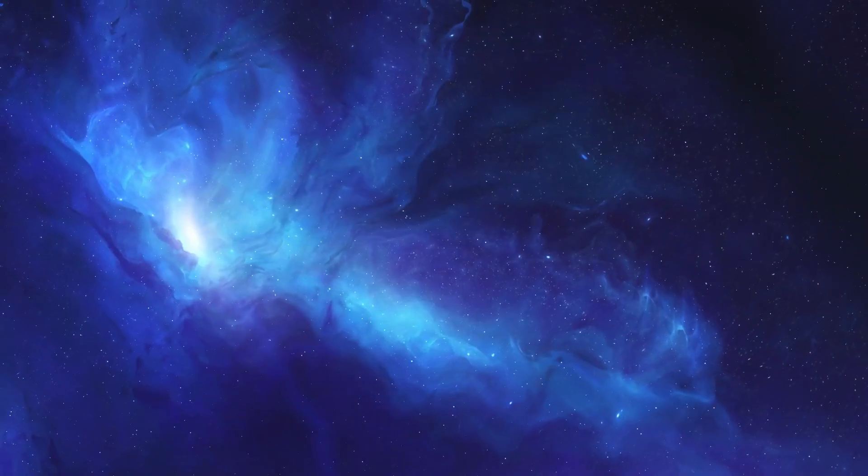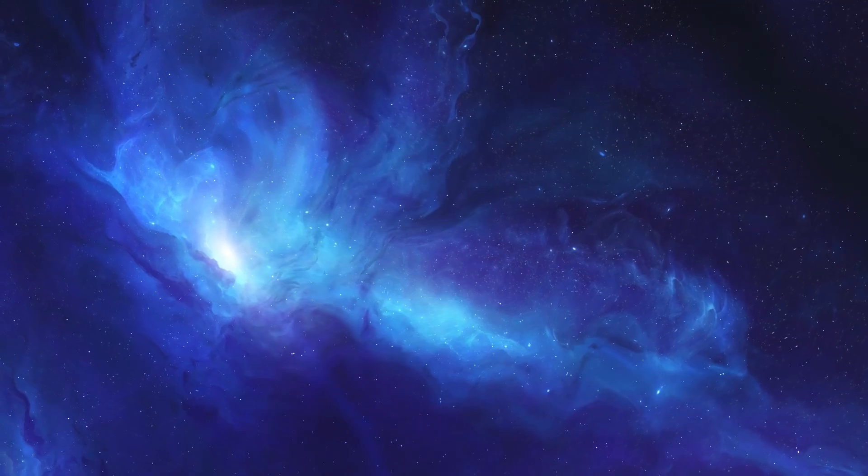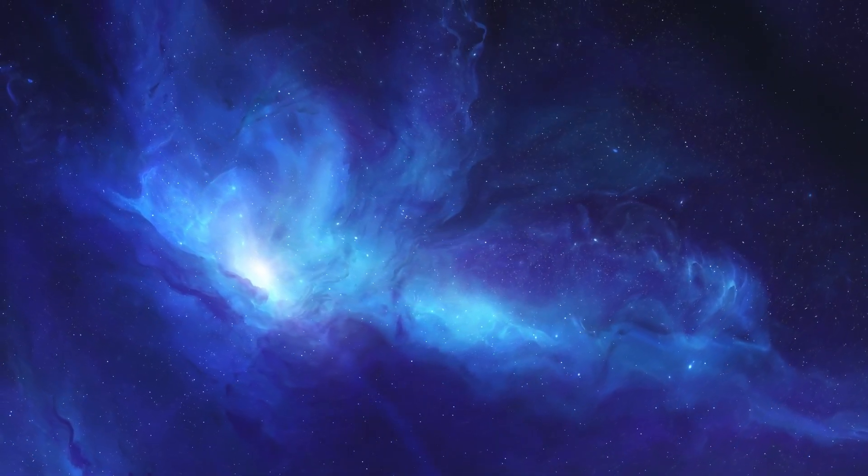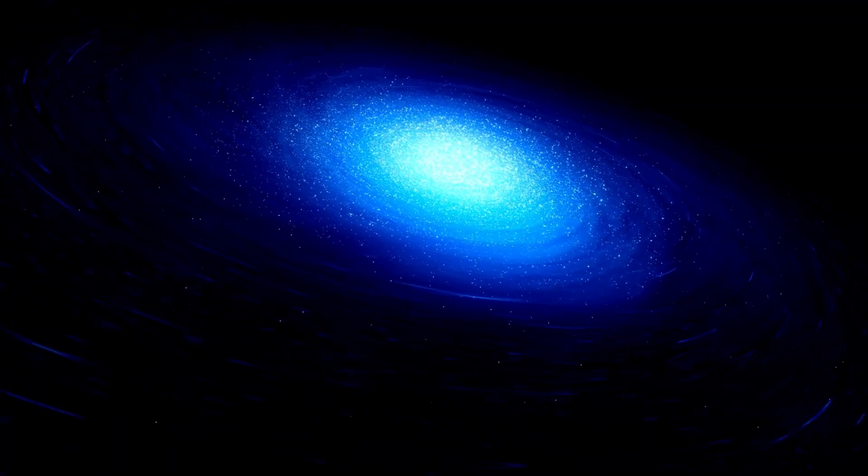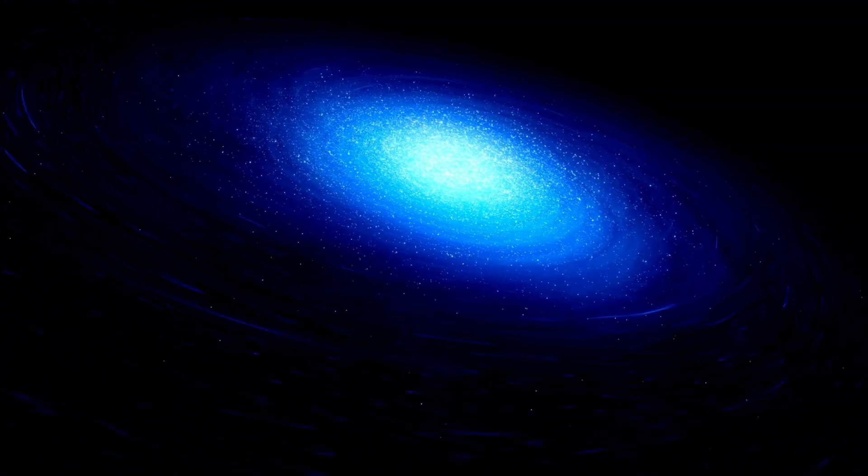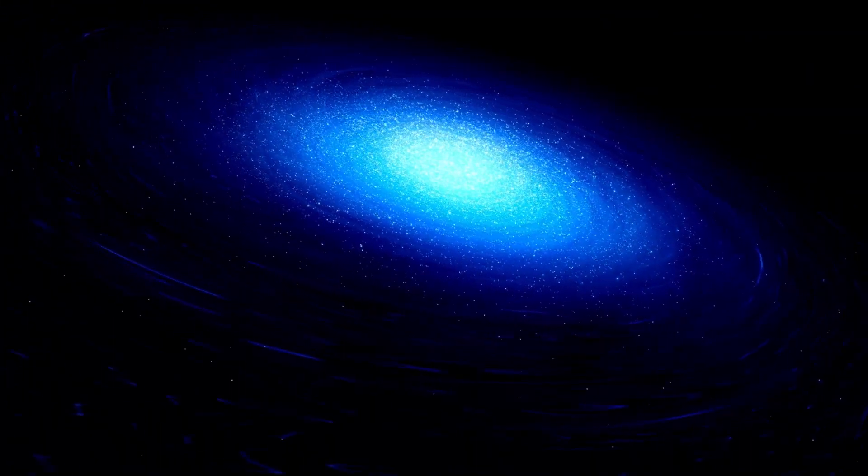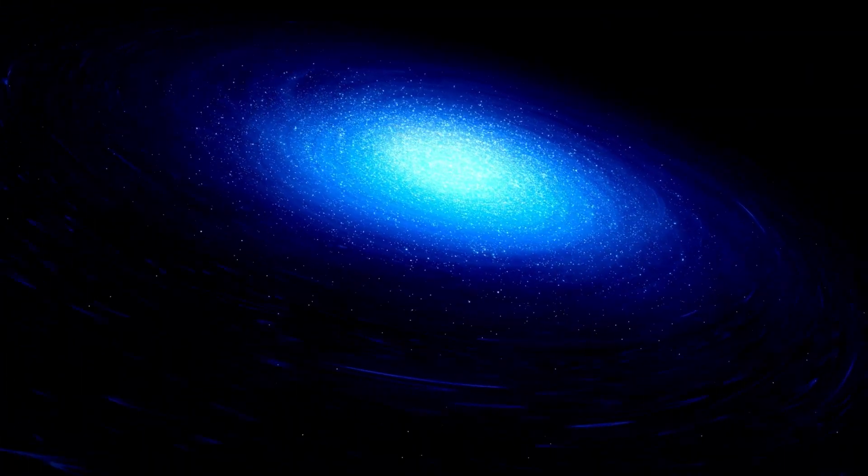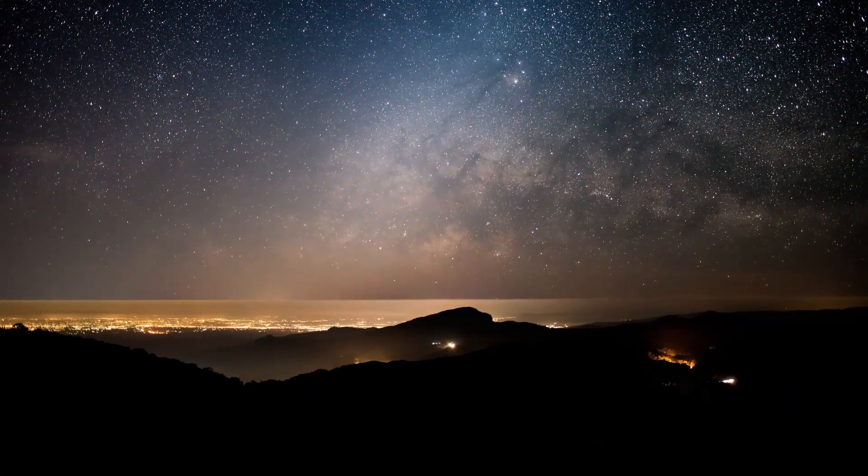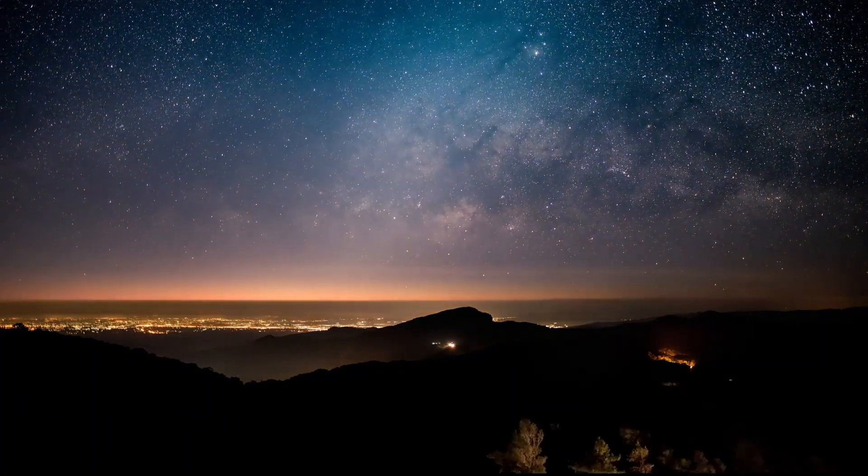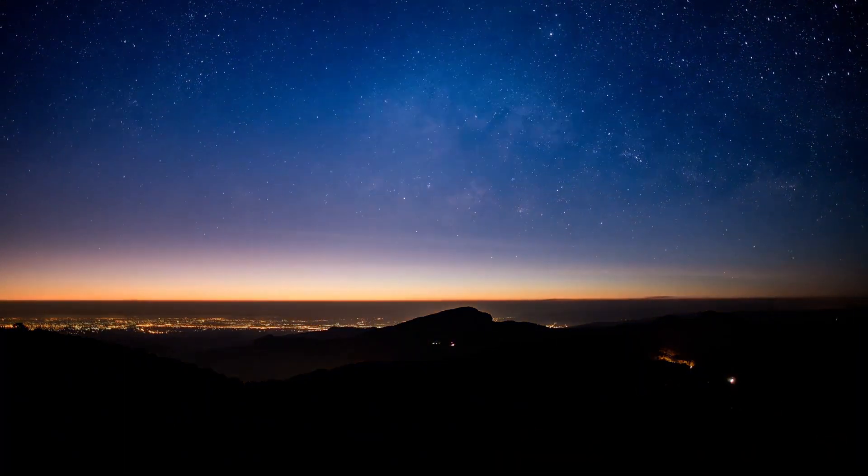Dark matter, an invisible and mysterious substance thought to make up about 85% of the universe's mass, shapes the large-scale structure of the cosmos. Conventional cosmology suggests that galaxies form within massive halos of dark matter, which gravitationally draw in ordinary matter, allowing stars and galaxies to coalesce. Yet JWST observations challenge this model, as galaxies appear to be forming in ways that defy our understanding of dark matter distribution.